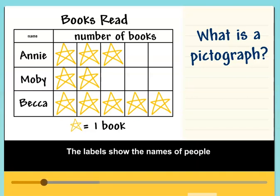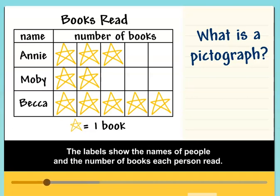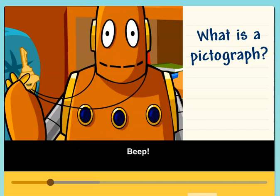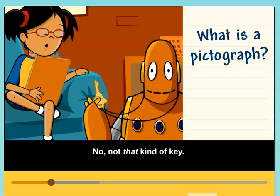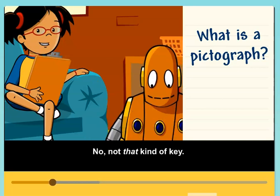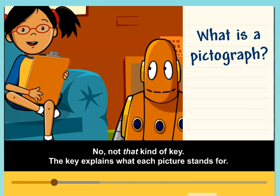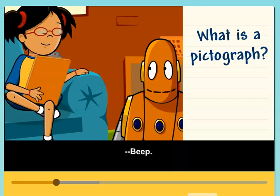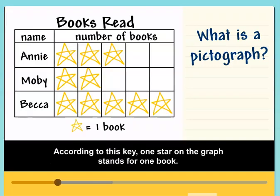The labels show the names of people and the number of books each person read. This is the key. Not that kind of key. The key explains what each picture stands for. According to this key, one star on the graph stands for one book.